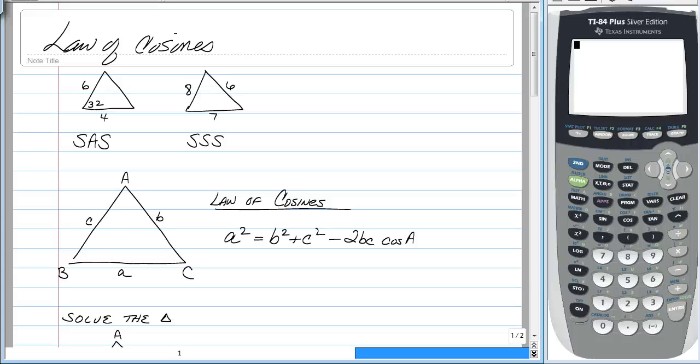Welcome back. Let's do this thing called the law of cosines. Now the law of cosines we're going to use when we do not have a right triangle. So we can still find missing angles and missing sides using the law of cosines.